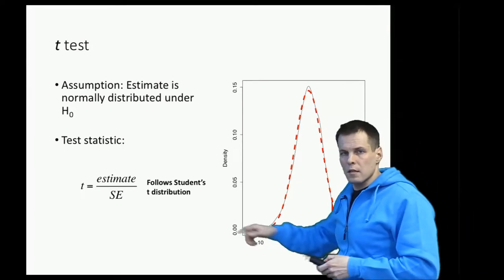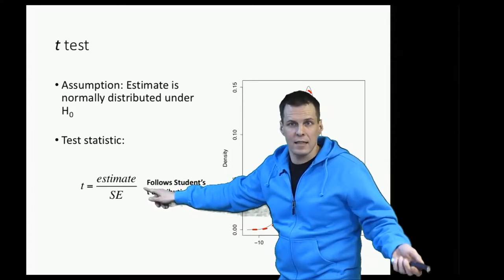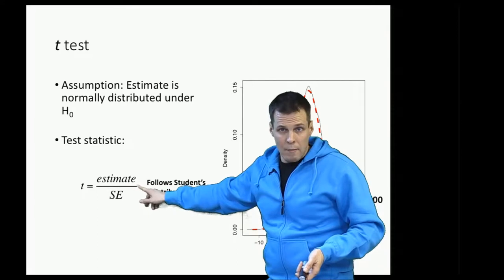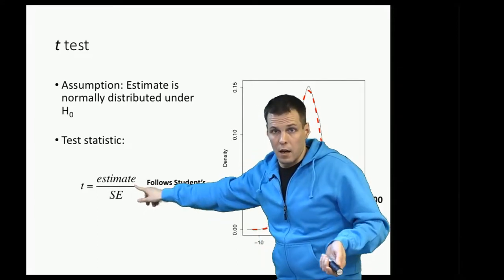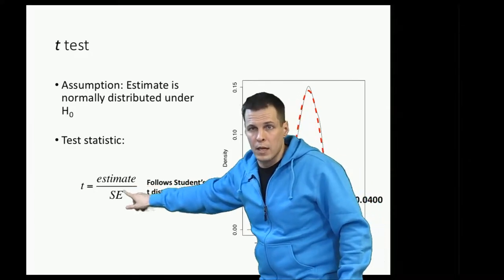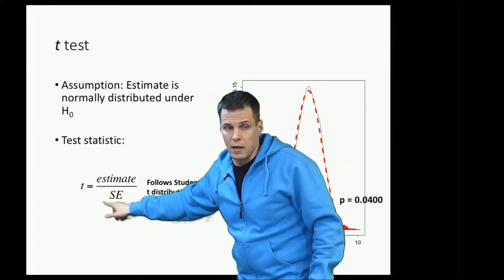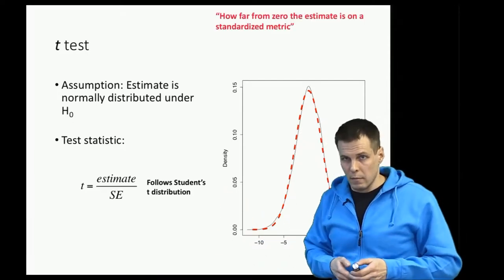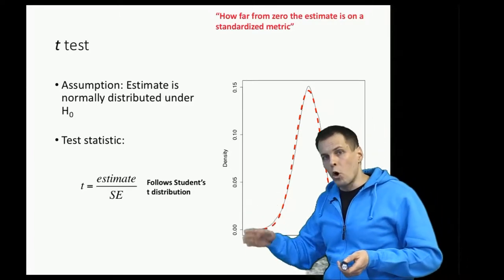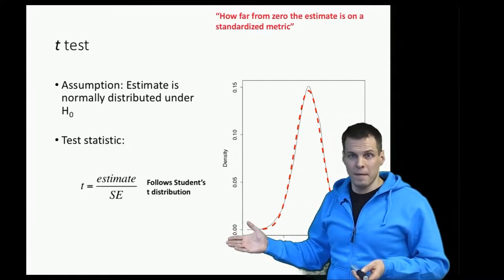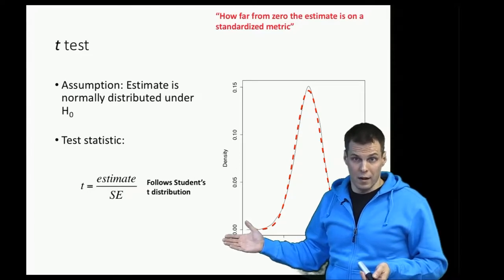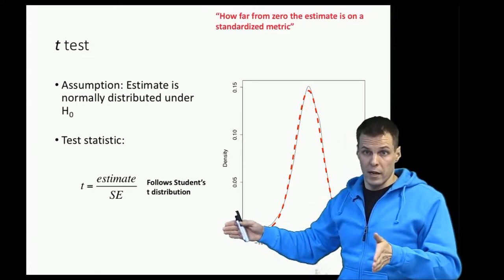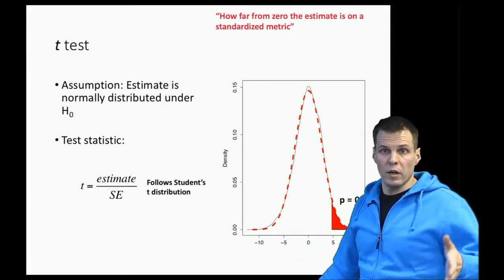The idea of a t-test, or this estimate divided by standard error, is that we standardize the estimate. Remember, standardization is subtracting the mean of the estimates—here we assume the mean to be the null hypothesis, so we subtract zero—and we divide by standard deviation, which is estimated by standard error here. So the t-statistic tells us how far from zero the estimate is on a standardized metric. If it's more than two standard deviations from zero, we conclude that that kind of observation would be unlikely to occur by chance only, because 95 percent of observations fall within plus or minus two standard deviations when we have a normally distributed statistic.